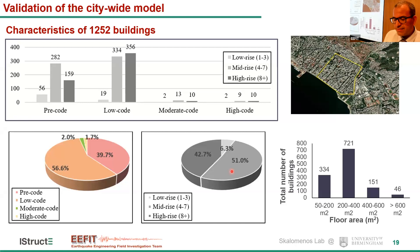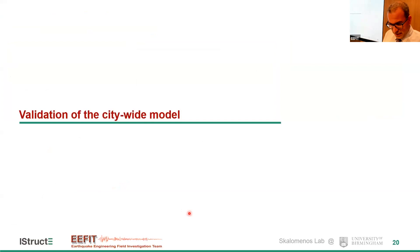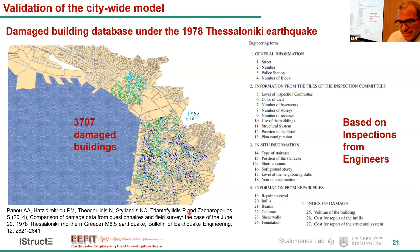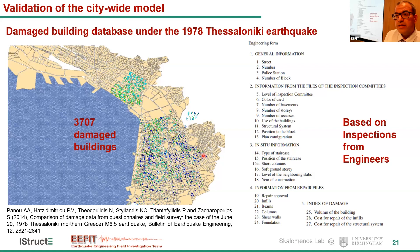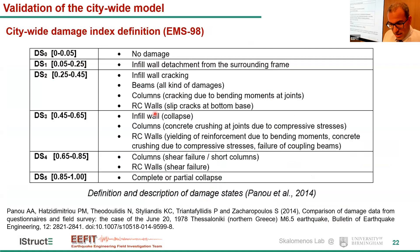Let's see how we validated the city-wide model. We used the database provided by Penelis et al., which represents substantial work from that period where engineers inspected every building after the earthquake and classified it to a specific damage state. We are talking about 3,707 damaged buildings. We use a subset of this data from our area to validate. The European Macroseismic Scale classification has five distinct damage states — from infill wall detachment from the surrounding frame up to complete or partial collapse — and we associate these damage states with the damage index calculated by the U-Simulator.